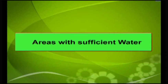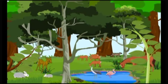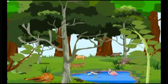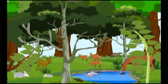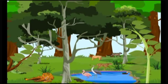In areas with sufficient amount of water, a wide variety of plants ranging from grasses to tall trees are seen. Most of the plants have broad leaves and most of the forests are found in these areas. As there is diverse vegetation, there will be a large number of herbivorous animals in these regions. Carnivorous animals which feed on the herbivores are also found in these regions.